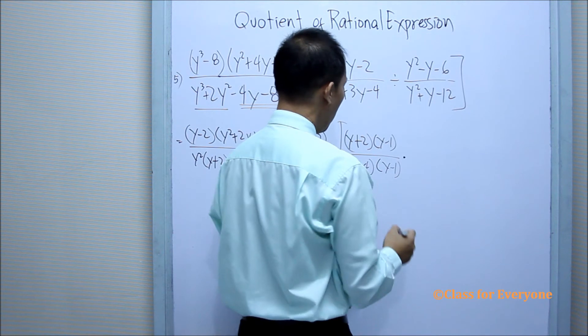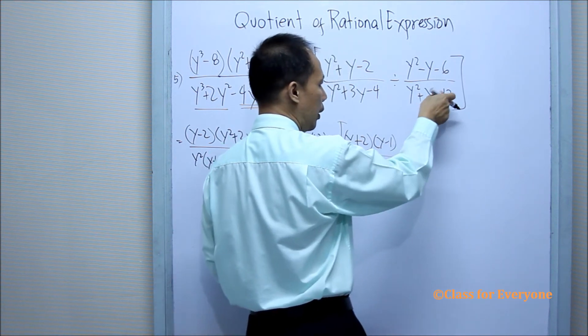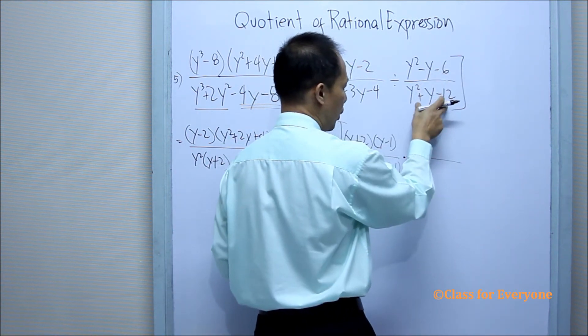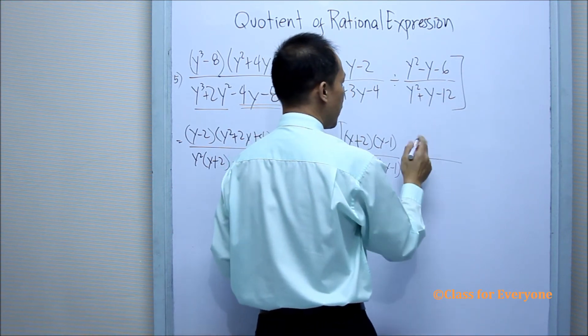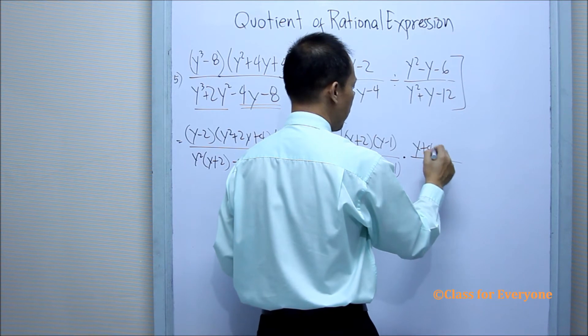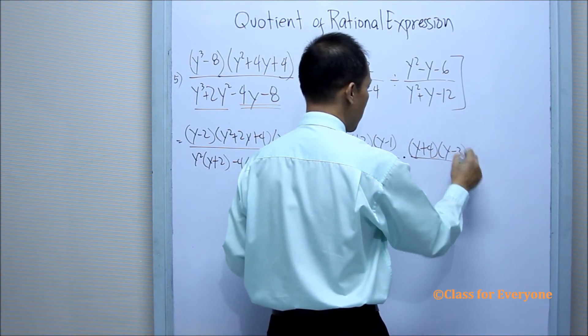Then we can do the multiplication because we can get the reciprocal right away. Factor first, then write it on the numerator. So that will be our reciprocal already. That will be y plus 4 times y minus 3.